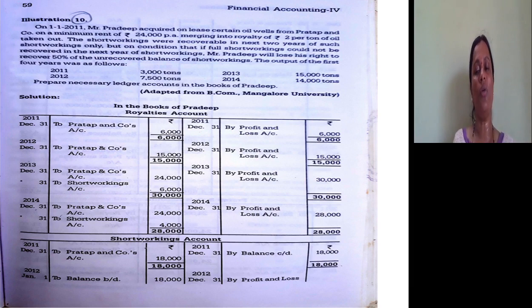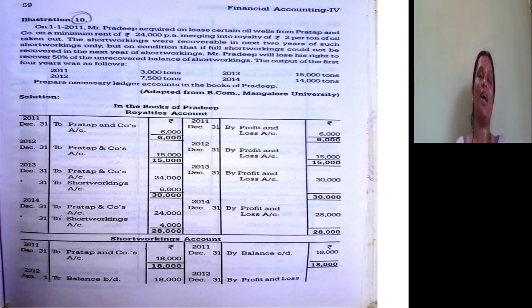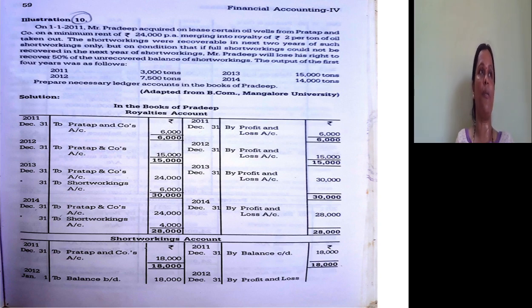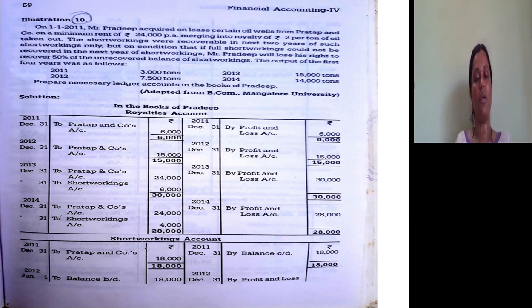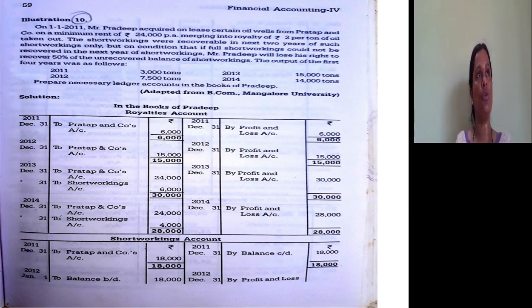We have to prepare ledger accounts in the books of Pradip. Pradip is the lessee, not the lessor. Just like the last problem, we prepare 3 accounts in the books of the lessee: one is the royalty account, the second is the short working account, and the third is the lessor account. But before preparing accounts, we should prepare the royalty chart. In the solution given to you, the royalty chart is not there, but I have added the royalty chart to this solution.